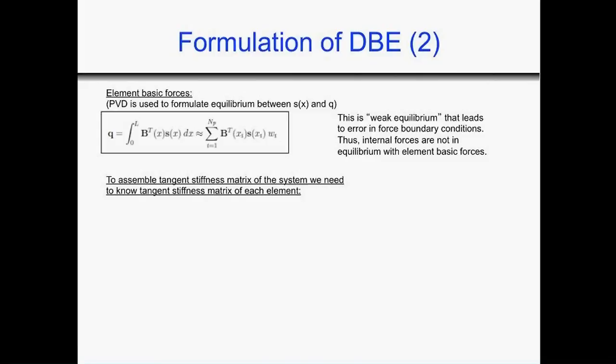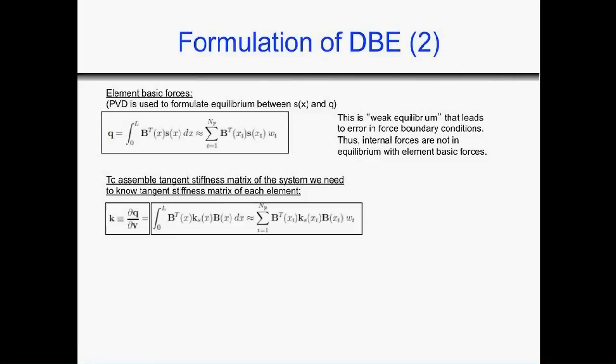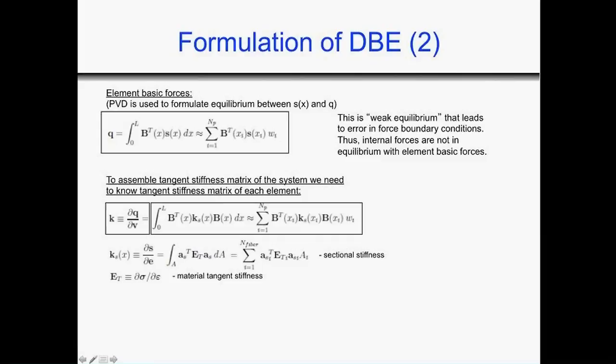To assemble the tangent stiffness matrix of the system, we need to know the tangent stiffness matrix of each element. For displacement-based elements, the tangent stiffness matrix is the derivative of basic forces over basic deformations, and after simplification it is calculated by integration of sectional stiffness along the element, where sectional stiffness is calculated by integration of material tangent stiffness for all fibers of the section.